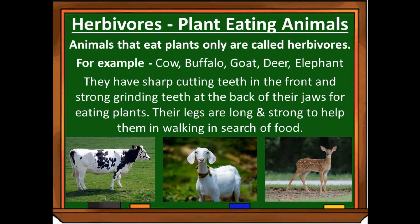Their front teeth are sharp for cutting. And they have strong grinding teeth at the back of their jaws for eating plants — so that they can grind the plant parts they have cut and divide them into smaller pieces.